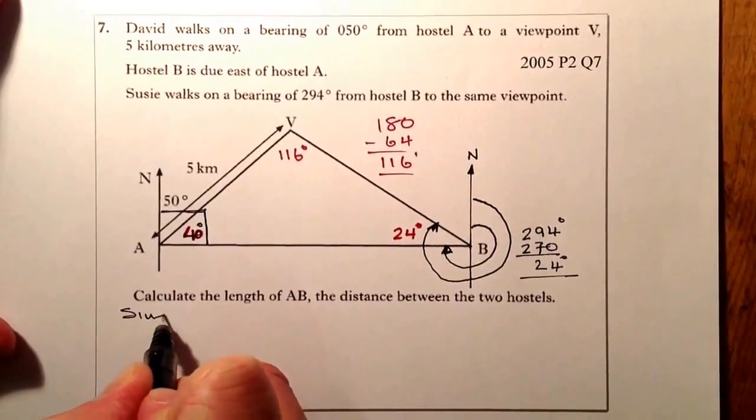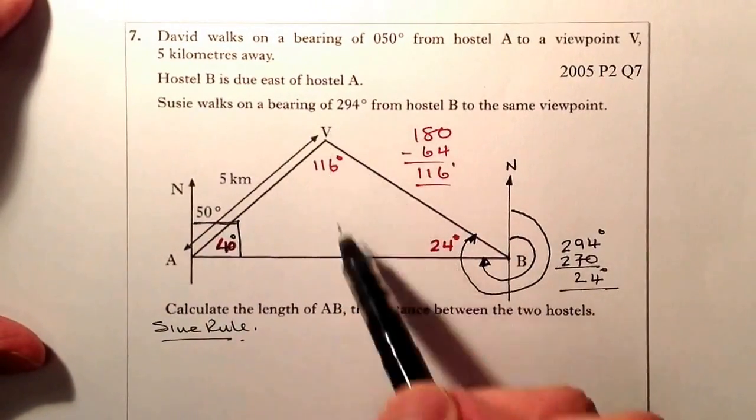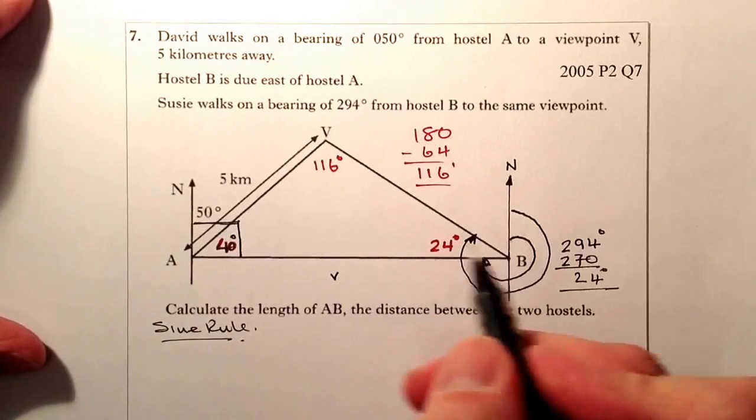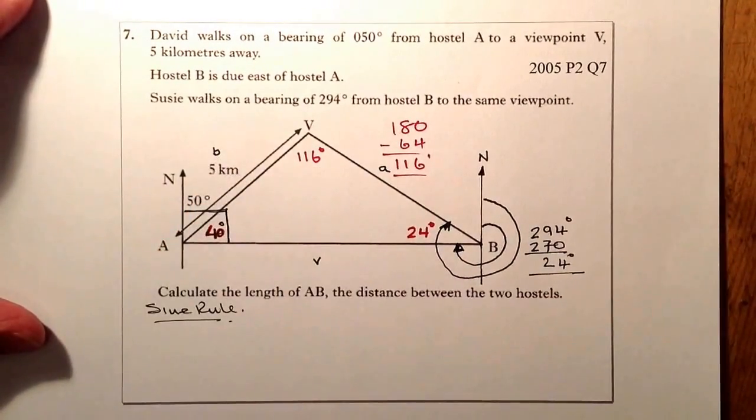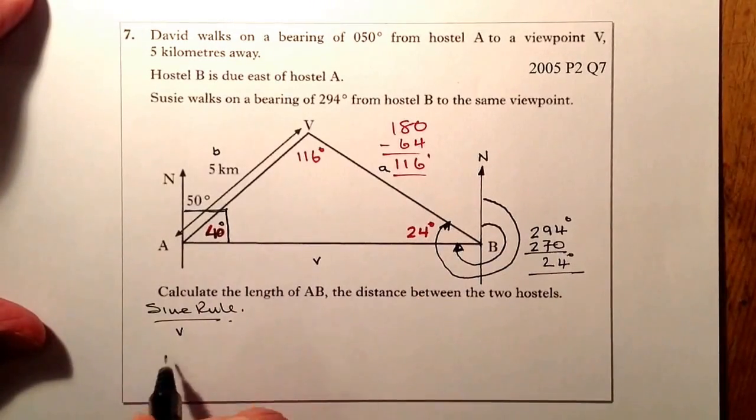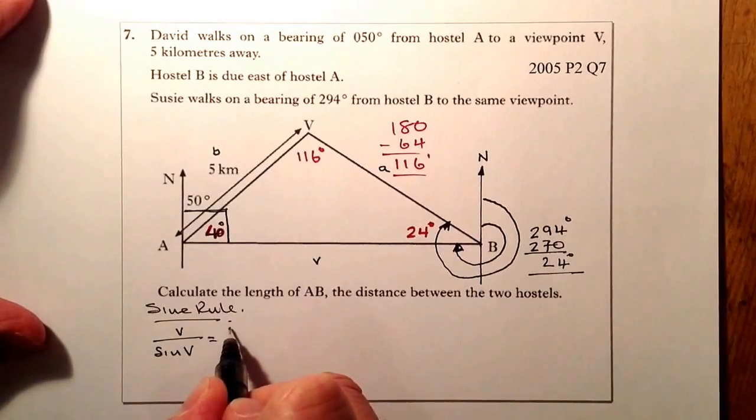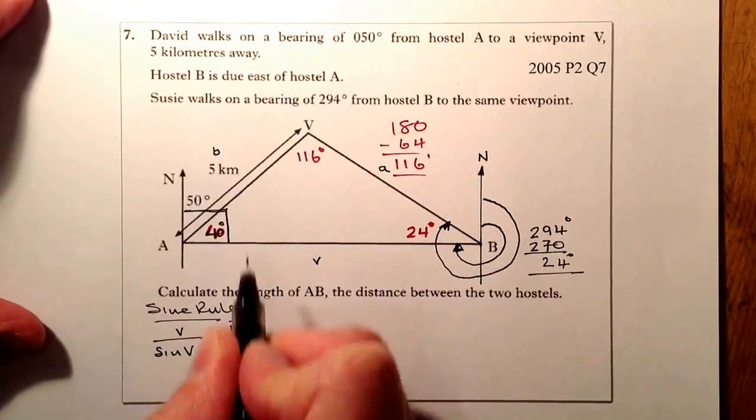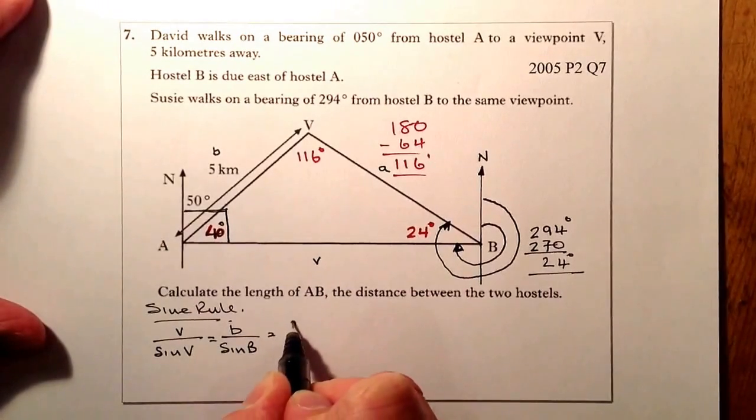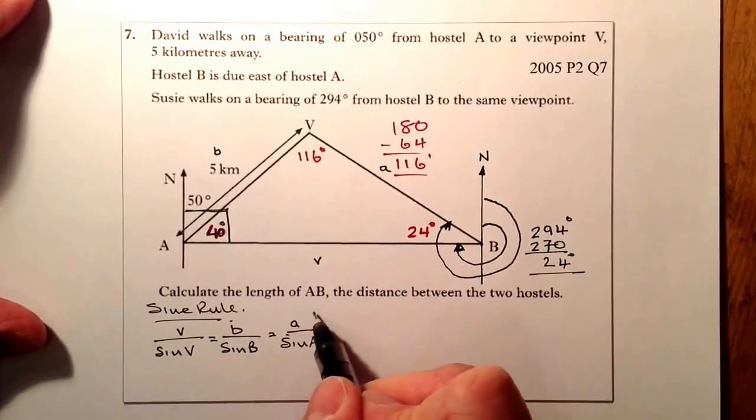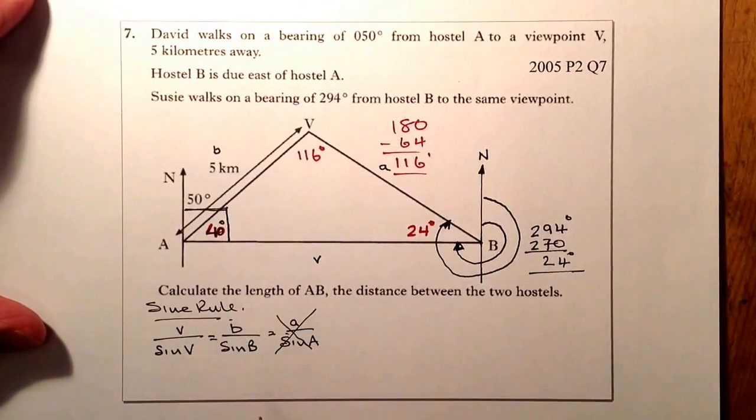So I'm going to use the sine rule. What I'm going to do is I'm going to change the letters around. I'm going to start with the one I'm trying to work out. So remember that will be a small v, that there will be a small a, this one here, the 5, is going to be a small b. So I'm going to say that small v over sine v equals small b, which will be the length of the side, divided by sine b, which equals small a over sine a. But I'm not going to use this one because I don't have the side across from it.